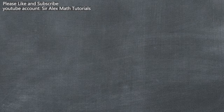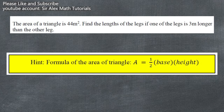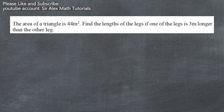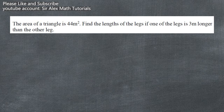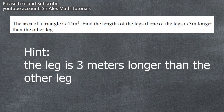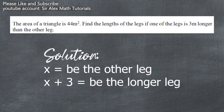Now let us try answering word problems involving geometrical shapes. The area of a triangle is 44 meters squared. Find the lengths of the legs if one leg is 3 meters longer than the other leg. We must first recall the formula for the area of a triangle: the area equals one half base times height. We need to identify the variables. We are given the area of the triangle which is 44 meters squared. Let x be the shorter leg and let x plus 3 be the longer leg.